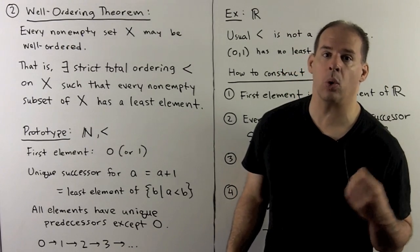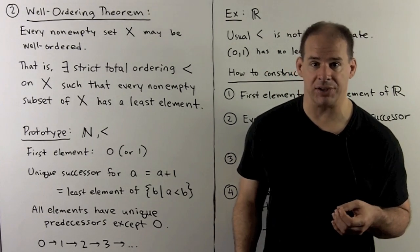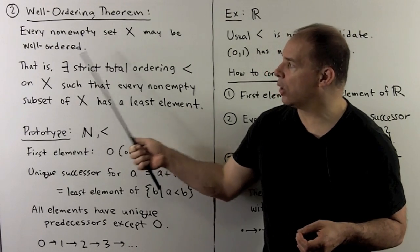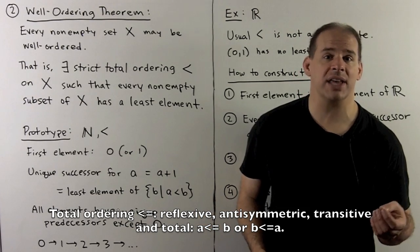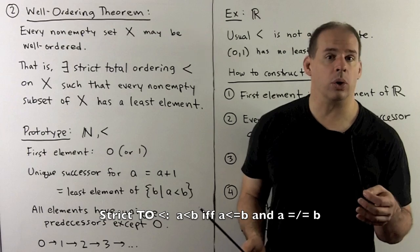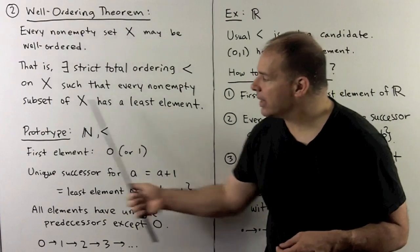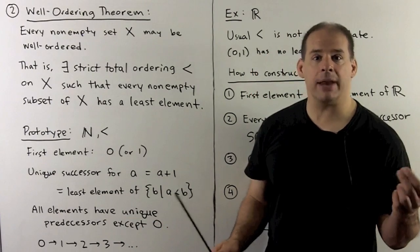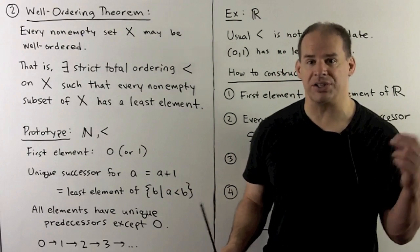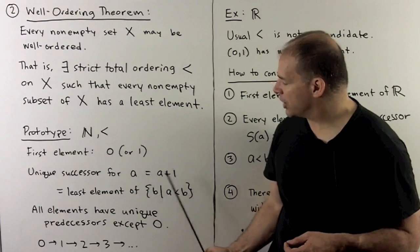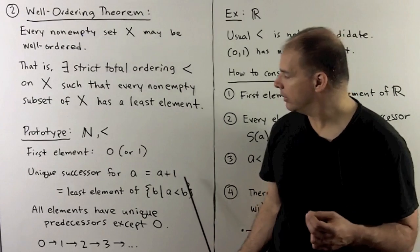Another consequence of the axiom of choice is the well-ordering theorem. The well-ordering theorem and the axiom of choice are equivalent in the ZF axioms. This says every non-empty set X may be well-ordered. By a well-ordering, we mean a strict total ordering on X such that every non-empty subset of X has a least element. The prototype for well-ordering is the natural numbers with the usual less than. Features of a well-ordered set: there has to be a first element, the least element for the entire set. Here, that's going to be 0 or 1, depending on how we define the natural numbers. Every element has to have a unique successor. For the natural number a, the successor is a+1. This is the least element of the set of all b such that a is less than b.